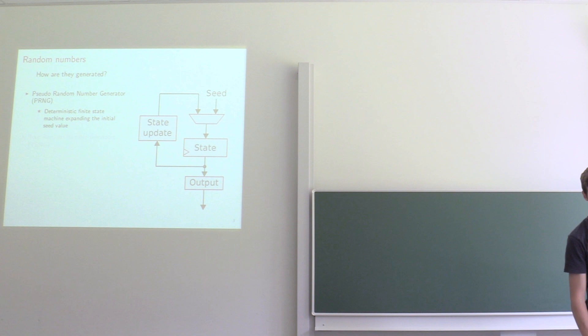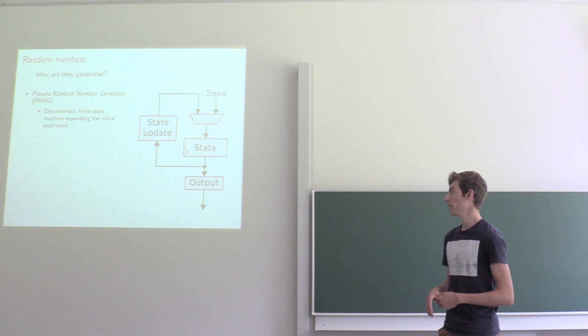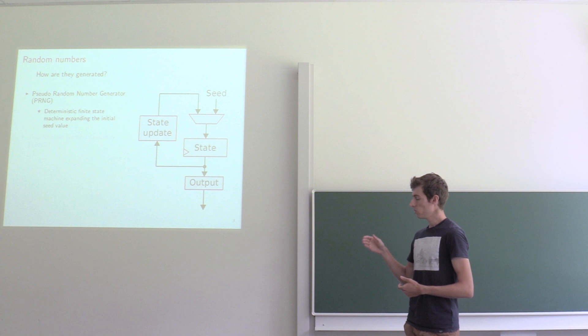So how are these numbers generated? If you need high throughput and good statistical quality, then most of the time you will use a pseudo-random number generator. This is a device that uses an algorithm or some deterministic algorithm that uses an internal state update function to generate a stream of randomly looking numbers.